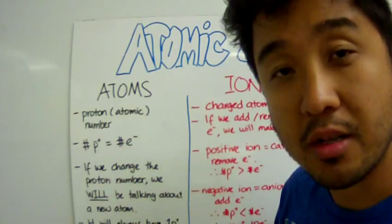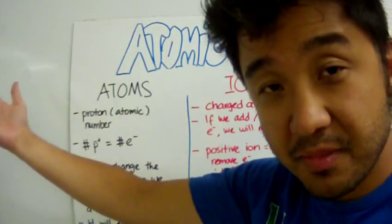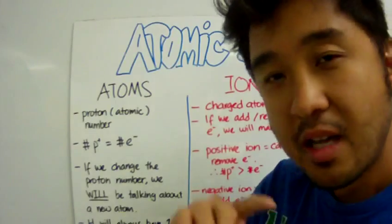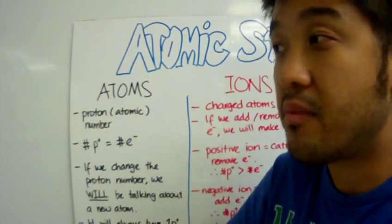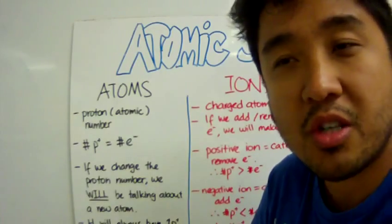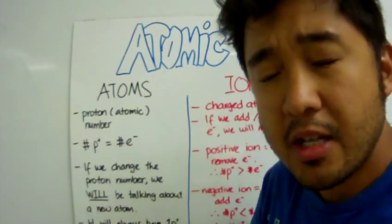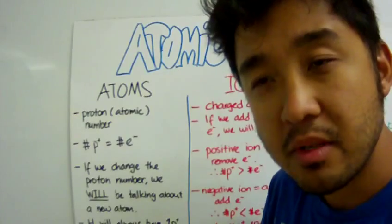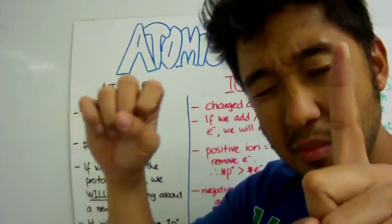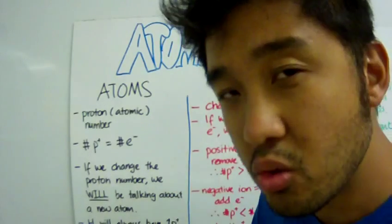What happens if we change the number of protons of a particular atom? For example, the sun — the sun that gives out sunshine — is mainly made of hydrogen. What happens in the sun is that there are nuclear reactions going on. Nuclear reactions are very high energy reactions, because it's really, really hard to get into the nucleus, which consists of protons and neutrons. But the sun has enough energy to do that. So what happens in the sun is that it takes a hydrogen atom — hydrogen has one proton — and another hydrogen atom, which also has one proton, and the sun fuses the two together to make a new substance with two protons.